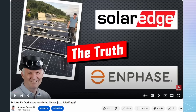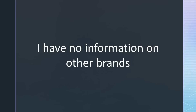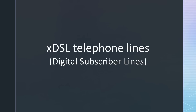If you are interested in how you can be cheated with optimizers, I have a video on my main channel discussing it in detail. Unfortunately, I am unfamiliar with the behavior of optimizers from other manufacturers such as Tigo. If you have any information, please share it in the comments or send sound examples to me. Another source of noise to consider is XDSL telephone lines, which generate broadband noise up to 30 MHz. Suppliers can also notch out specific frequencies upon request. Fortunately, I do not have such devices near my home.